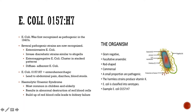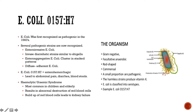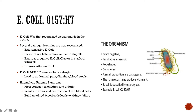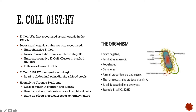E. coli strain O157H7 was first indicated to be pathogenic when it was isolated from an infant with diarrhea in the 1940s. Since then, strains of E. coli have been shown to have a role in intestinal and extraintestinal diseases. Among humans, a number of host-adapted pathogenic E. coli strains are recognized for gastrointestinal disease.